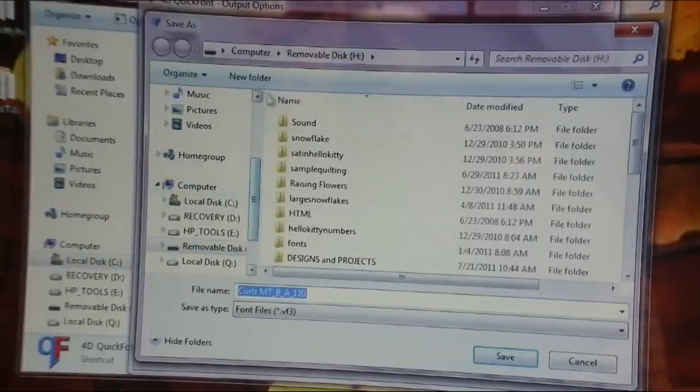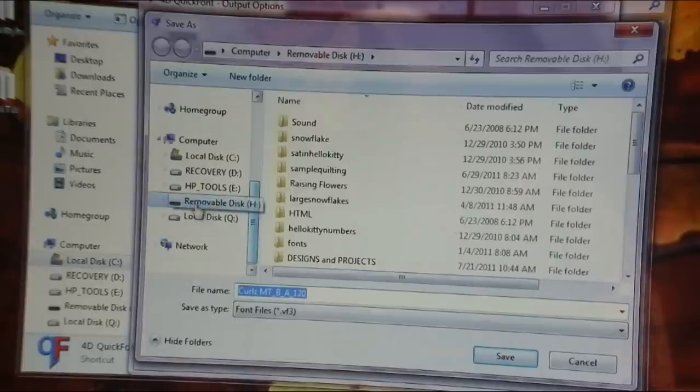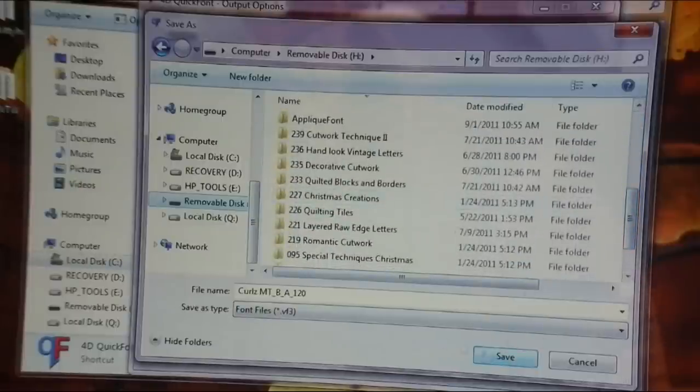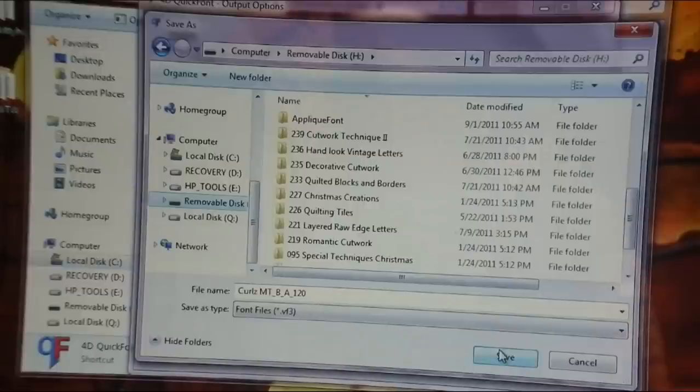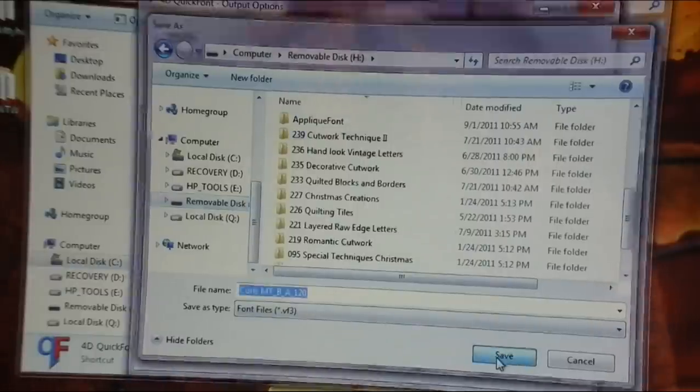So what I'm going to do is select it over here, make sure it's selected, the removable disk, and there's all my embroidery files. So I know this is it. I'm just going to look at the file name so I can remember it when I look.